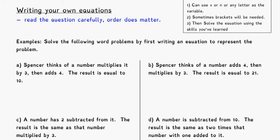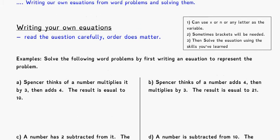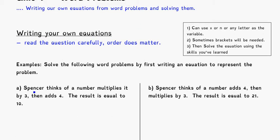So if I ask you to write an equation, let's read through the first example. Spencer thinks of a number — any old number, let's call it N — multiplies it by 3 and then adds 4. The result is equal to 10. So what would an equation look like? Spencer thinks of a number N, multiplies it by 3 and adds 4, and the result is equal to 10. That's N times 3 plus 4 is equal to 10.